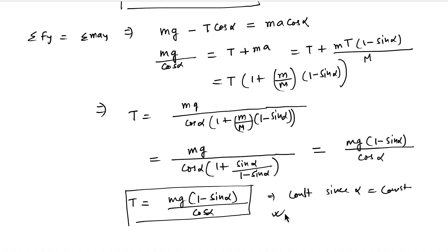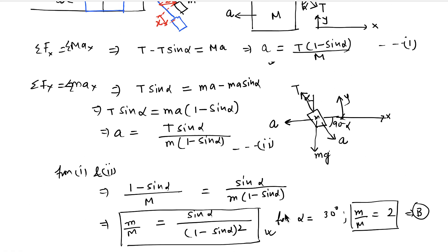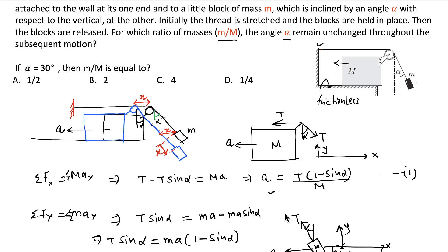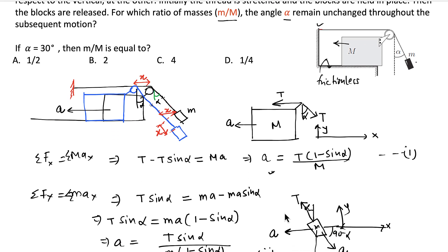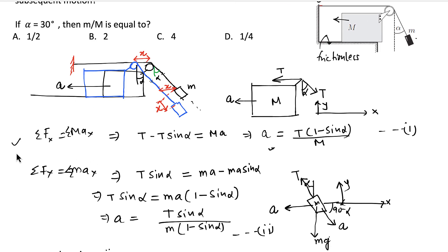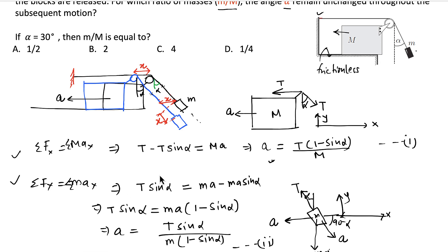So this is the expression for T here. This is a very likely question in IIT JEE kind of examination where the calculation is not much. Hardly two equations and you could solve this problem. But there is some level of thinking required to analyze the motion and to come to the conclusion that this mass has the same acceleration in this direction and also in x direction. And once you know that, then these two equations are sufficient to give you the answer.